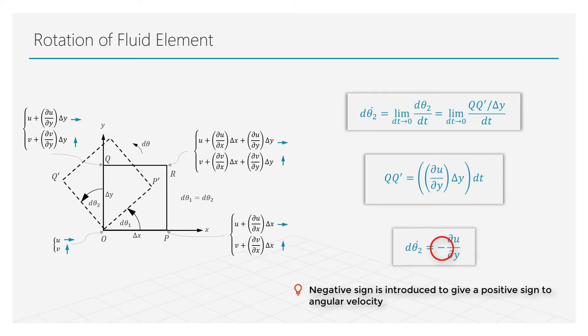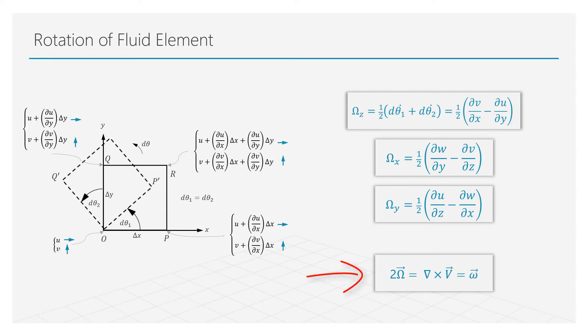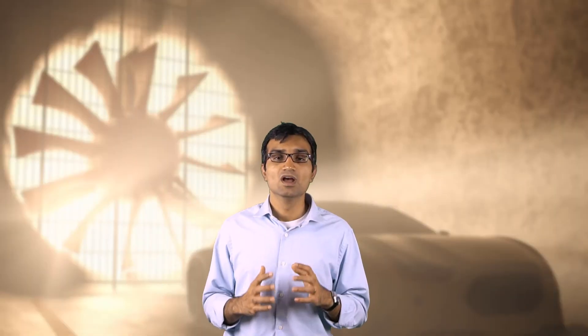The overall angular velocity about the z-axis is defined as the average angular velocity of these deformations per unit time. Other components of angular velocity can also be defined in the same manner. In fluid dynamics, vorticity is defined as the measure of rotation of a fluid element and mathematically it is equal to twice the angular velocity or rotational speed of that element. A more detailed discussion on vorticity and vortex flows is presented in the next lesson.